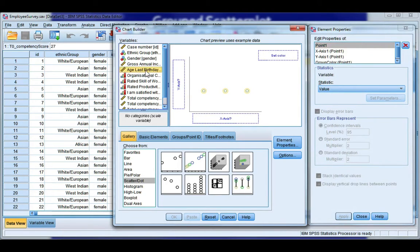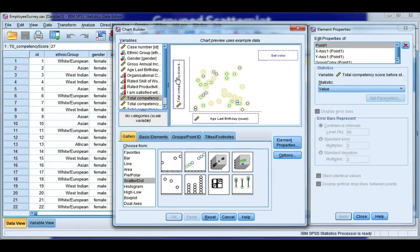Age is my independent variable because it will not change based on my competency. So if I become more or less competent, I'm not going to become older or younger. And my competency when I start my job is dependent, so it's going to the y-axis because it may depend upon my age.